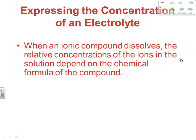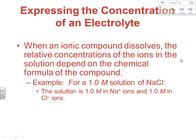When writing the concentration of an electrolyte like an ionic compound, when it dissolves, the relative concentration of the ions in solution depends upon the chemical formula. For example, a 1 molar solution of NaCl, as it dissociates as a strong electrolyte, gives you a 1 molar sodium ion concentration and a 1.0 molar chloride ion concentration, so the total solute concentration would be 2.0 molar. This relationship matters for colligative properties like boiling point elevation and freezing point depression, which we'll cover later in the year.